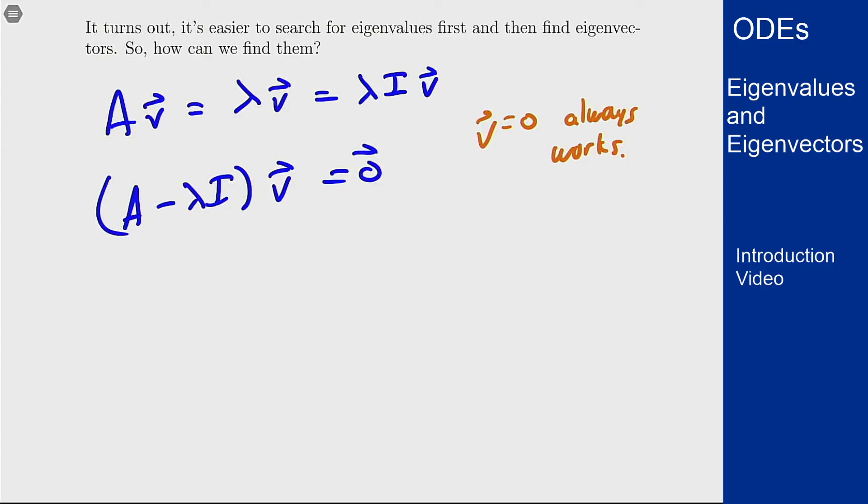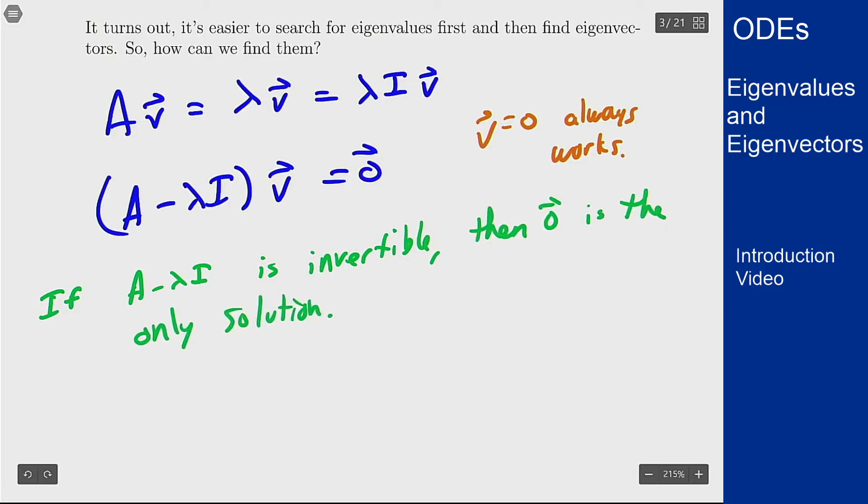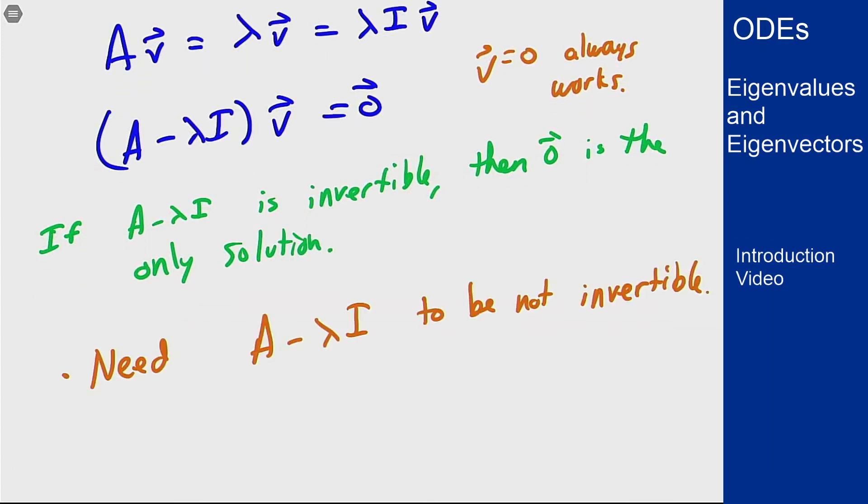Well if A minus lambda I were invertible, then there's only one solution and it's zero. So in order to have a chance to find an eigenvalue or define an eigenvalue, we need this matrix A minus lambda I to be not invertible. And how do we characterize that?